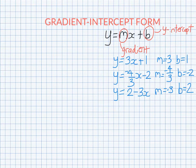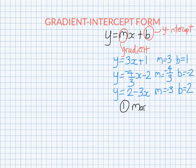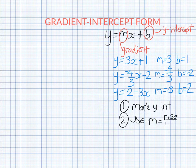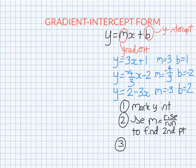So this is very helpful when we come to graph. What you can do to graph when it's in gradient intercept form is you can start by marking the y intercept which is really easy to do. And then what you do is you use m. Remember the gradient is rise over run. You can use that to find a second point.